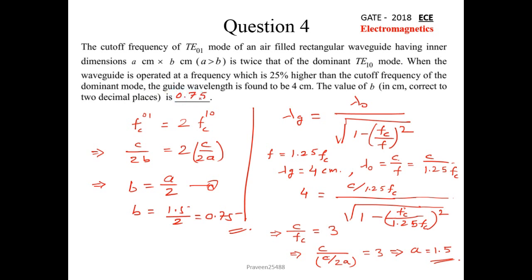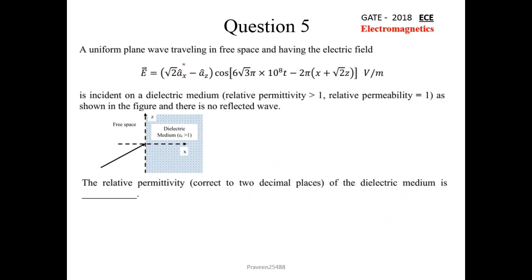Next question: A uniform plane wave traveling in free space has a given electric field expression and is incident on a dielectric medium with relative permittivity εᵣ > 1 and relative permeability μᵣ = 1, with no reflected wave. We need to find the relative permittivity. From the figure and electric field expression, the components are √2 and 1, so the incident angle θᵢ satisfies tan(θᵢ) = √2 / 1 = √2.